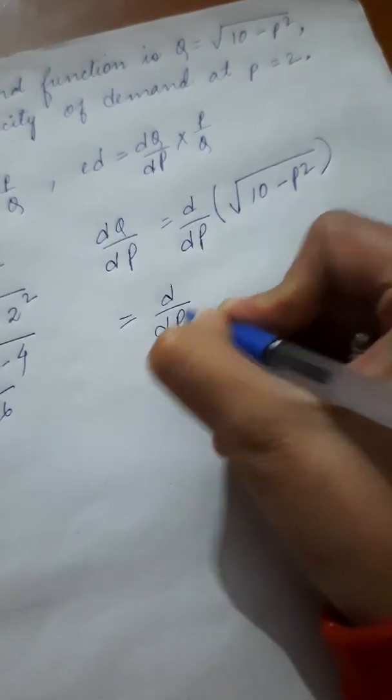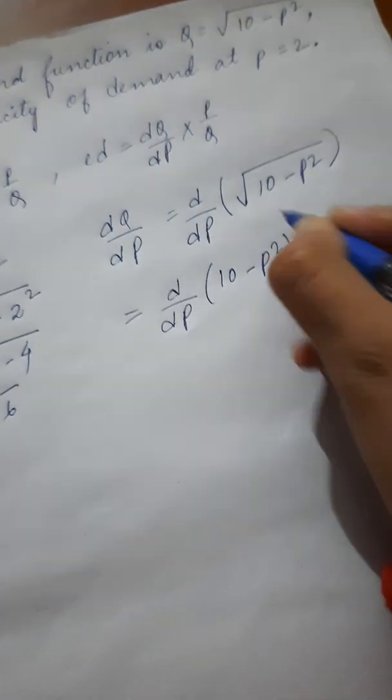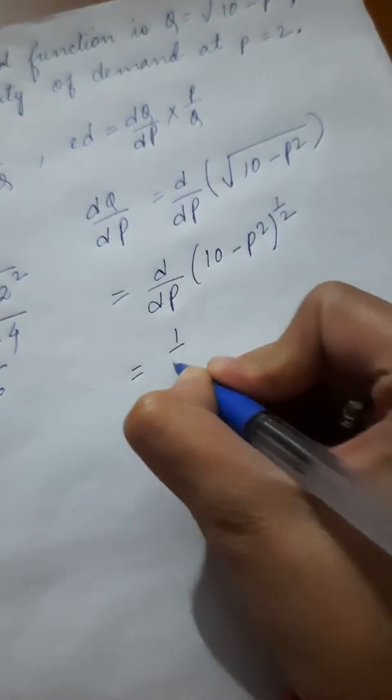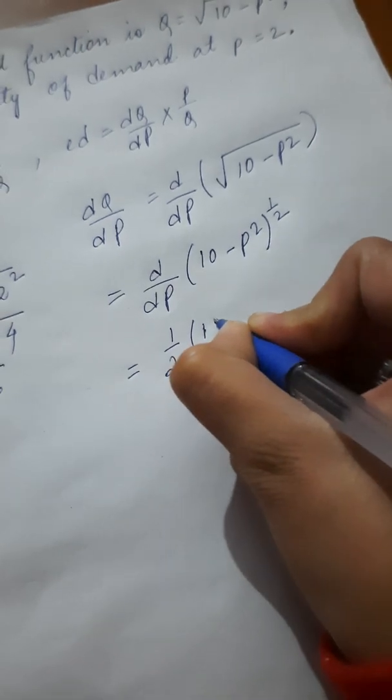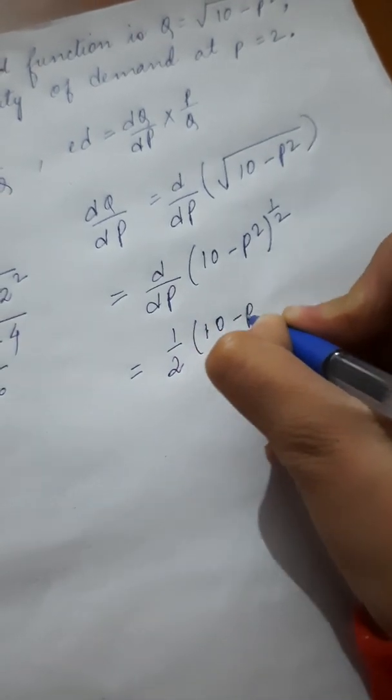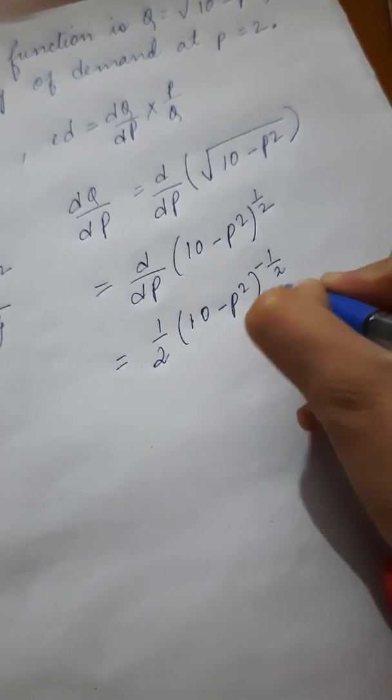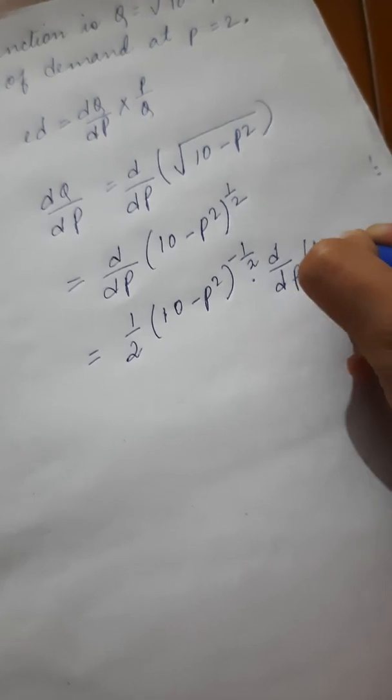So, d by dp of 10 minus p squared, and instead of square root we can write it as power half.